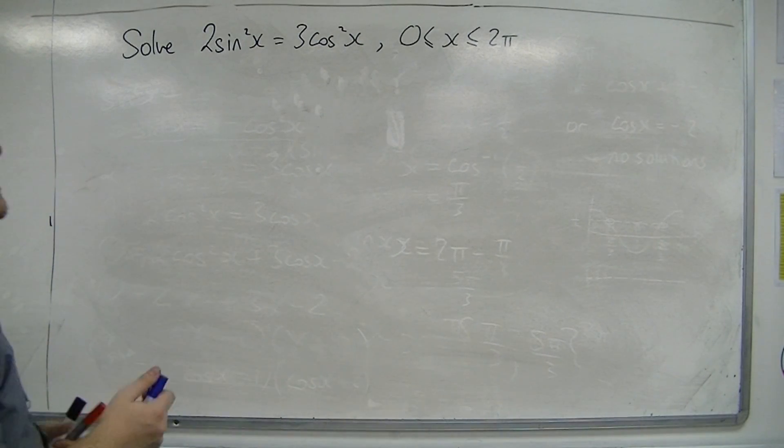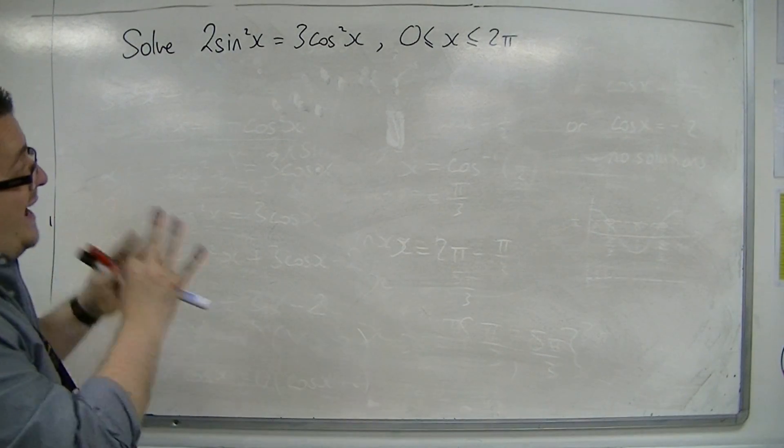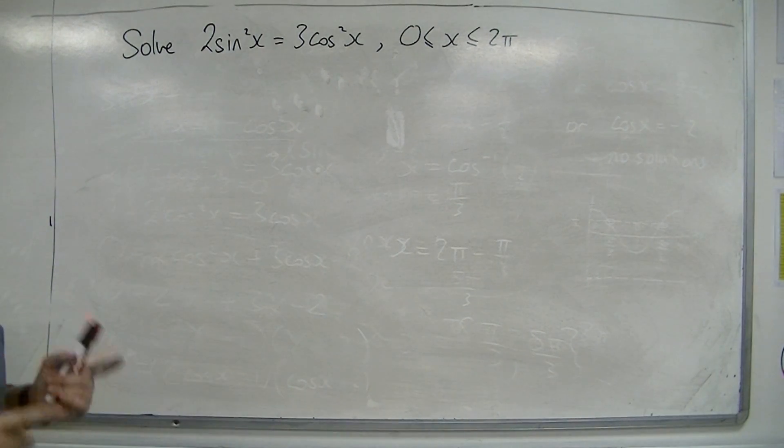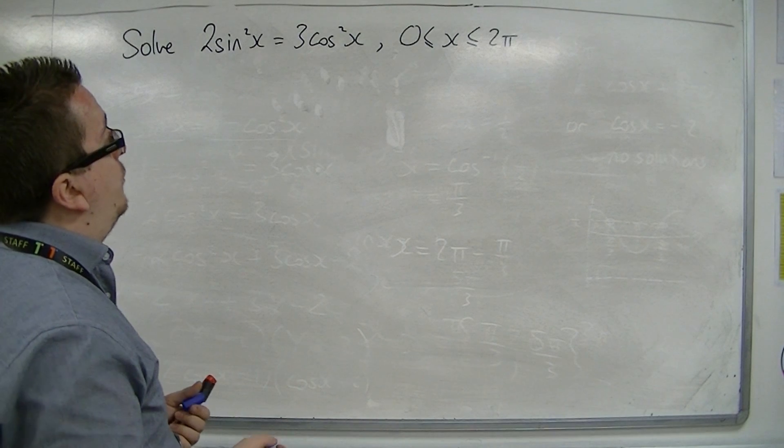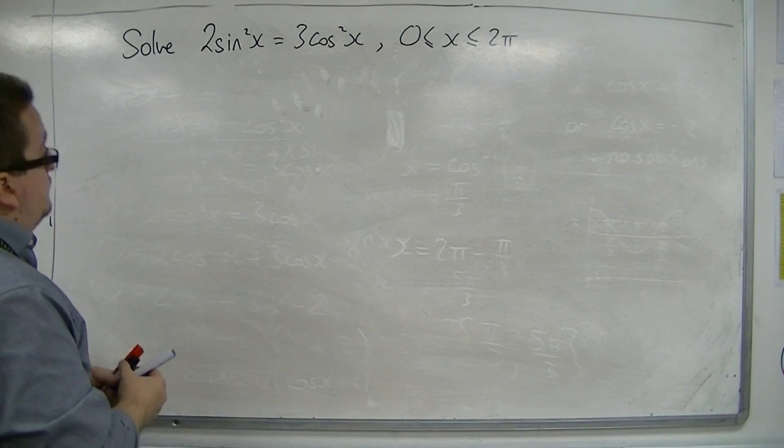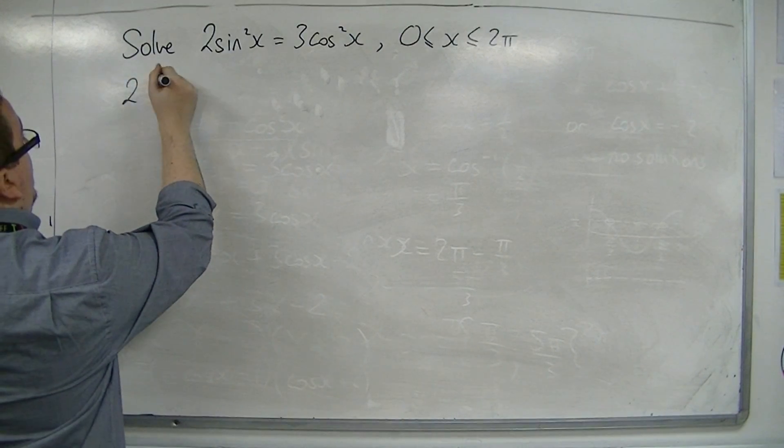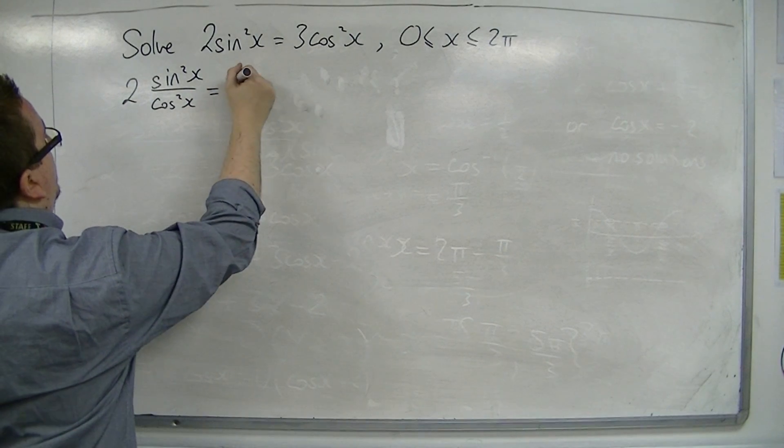I'm not putting you off from other ways of doing it, but I'm just showing that you can spot other ways that do not specifically involve using the trig identity sine squared plus cos squared equals 1. If we divide both sides by cos squared, we get 2 sine squared x over cos squared equals 3.